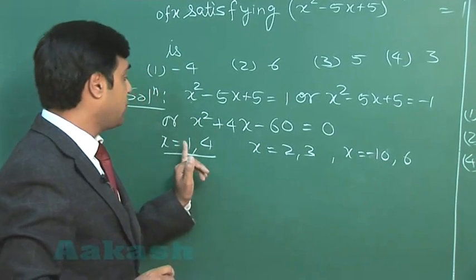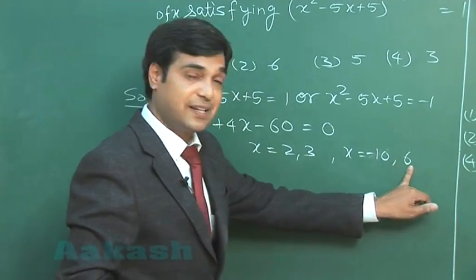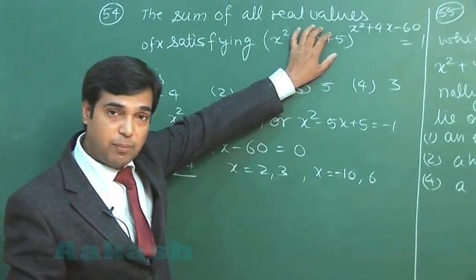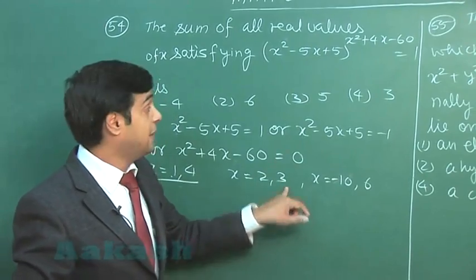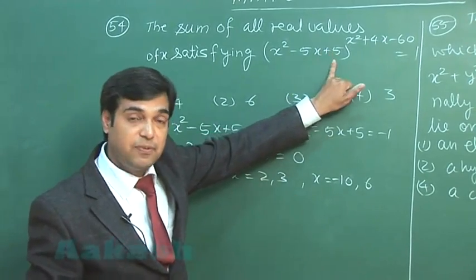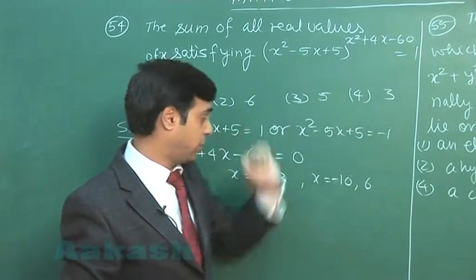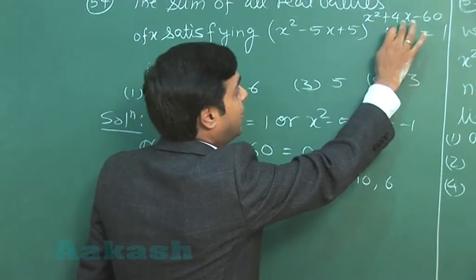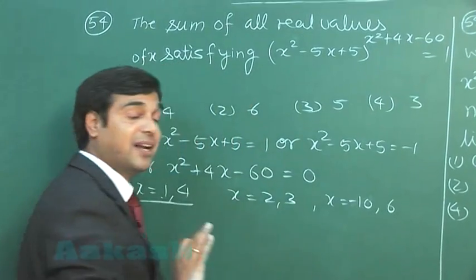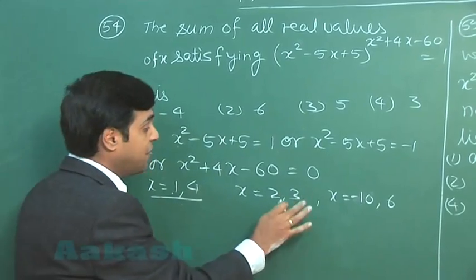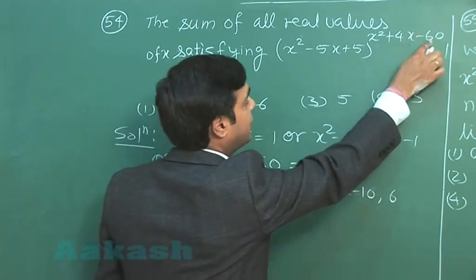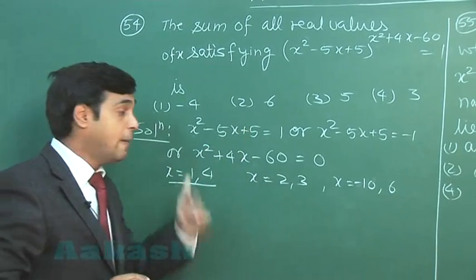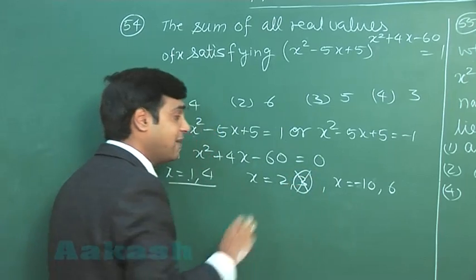Now when I check the values 1, 4, 2, 3, minus 10, 6, when I am going to put 1 or 4, obviously I know this is going to become 1, no problem in that case. When I say 2 or 3, it is going to become minus 1. I need to verify whether the power is even or not. On substituting x is equal to 2, I observe the power is 4 plus 8 minus 60, that is an even number. So this will become 1. On substituting 3, I can clearly see this will be odd and the remaining 2 will be even. So power becomes odd, meaning that the value will come out as minus 1. So 3 will not be a solution.